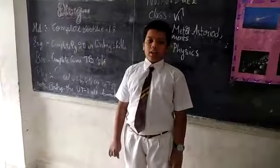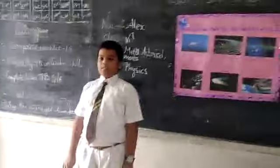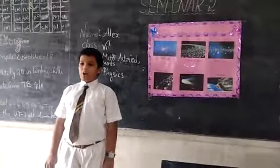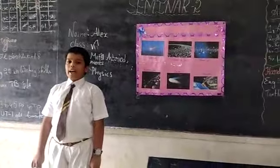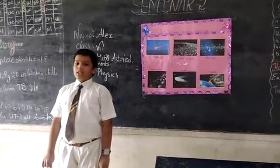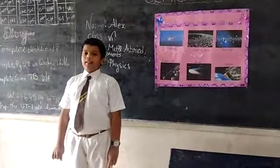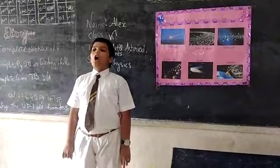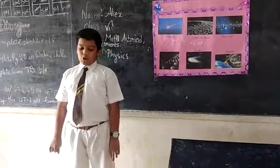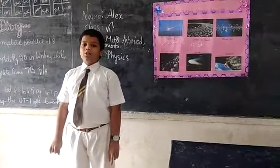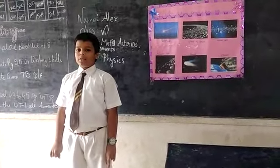The parts of a comet are known as the dust tail, the gas tail, the coma, and the nucleus.